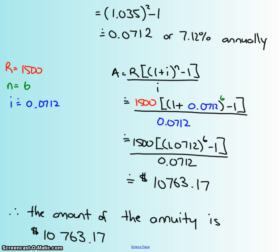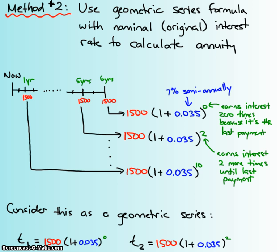Let's take a look at another method. Here's method number 2, using a geometric series formula to figure out the annuity. So this right here represents the geometric series. Each of the arrows is pointing at one of the term values of the geometric series. So this is the first term value, or your a, this is the second term value, and so on up until your last term value.